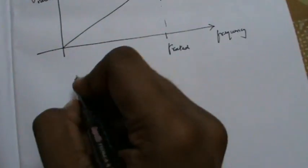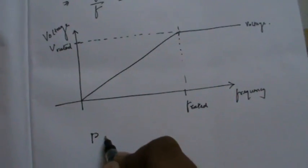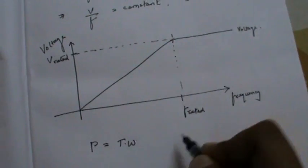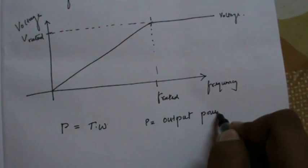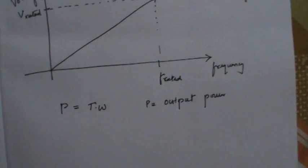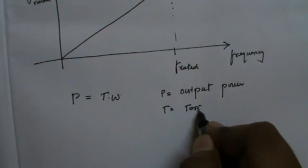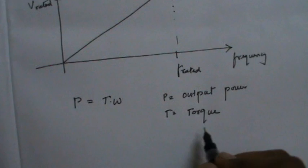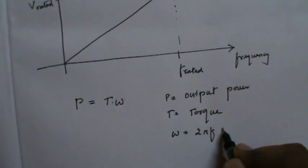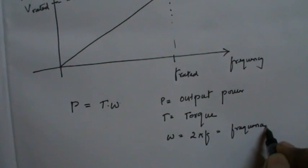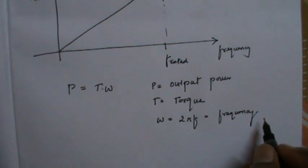Now let us concentrate on another basic concept — torque and omega. Output power P is equal to torque T times omega. Here T is the load torque and omega equals 2π times F, so omega is effectively the frequency. This relationship can be read directly from the graph.